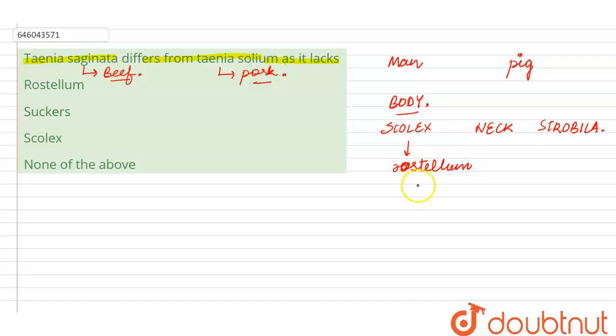The rostellum bears at its base approximately 22 to 32 small curved chitinous hooks. So, made up of chitin, these are hooks placed in two circles. These hooks are in two circles.